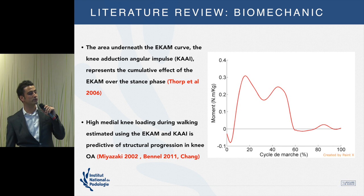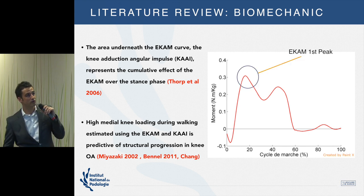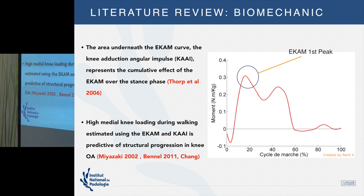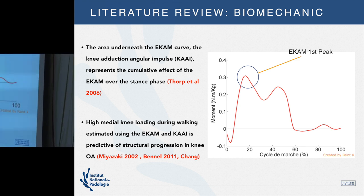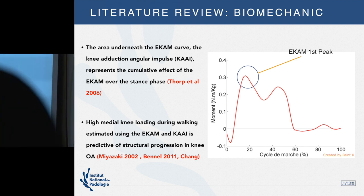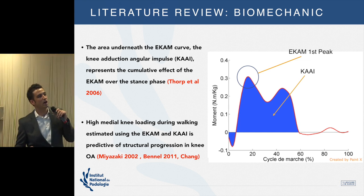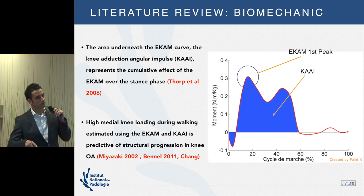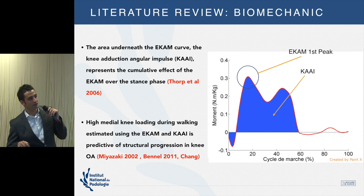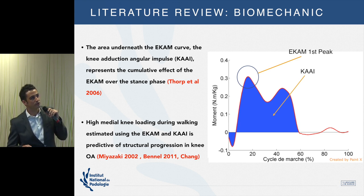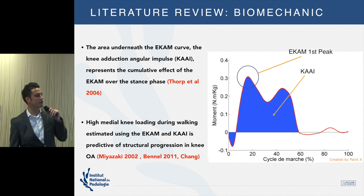Two important points about the EKAM: the first peak of the EKAM is described as proportional to osteoarthritis development. The second point is the knee adduction angular impulse (KAAI), which is the area under the EKAM curve and represents the cumulative effect of the EKAM. Both of these metrics are very predictive of structural progression in osteoarthritis.